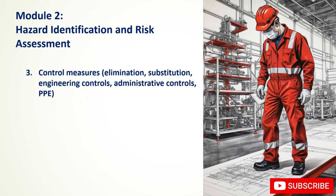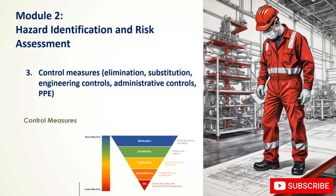Control measures are actions taken to eliminate or reduce risks in the workplace. The hierarchy of controls outlines the preferred order of implementation. Elimination is the most effective measure, involving removing the hazard entirely — for example, replacing a hazardous chemical with a safer alternative or redesigning a process to eliminate the need for a particular task. Substitution involves replacing the hazard with something less hazardous, such as a less toxic chemical or quieter machine.